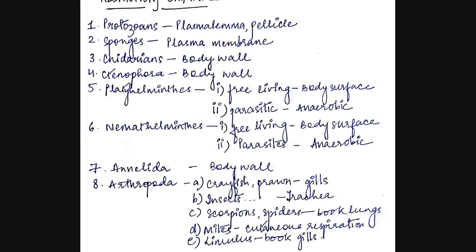The next are the sponges, for example the sycon, and for them the plasma membrane of each of the cells is the respiratory organ. And for cnidarians, that is for example hydra, the body wall is the main respiratory organ.